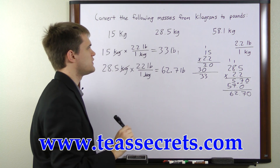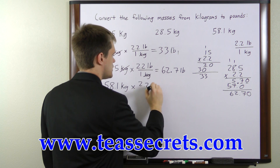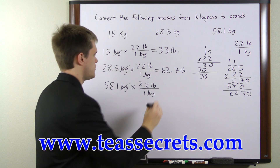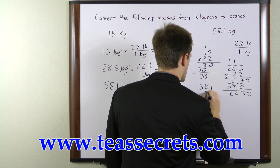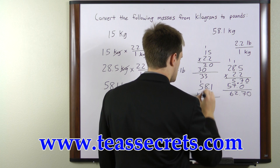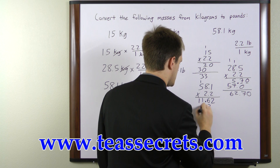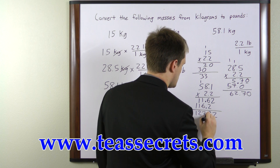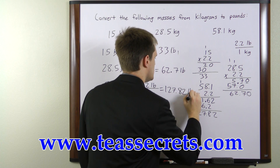Our final mass is 58.1 kilograms. We multiply it one more time by our conversion factor, 2.2 pounds per one kilogram. The units cancel and we have 58.1 times 2.2 pounds. 2 times 1 is 2; 2 times 8 is 16; 2 times 5 is 10 plus 1 is 11. This is just going to be the same pattern of numbers repeated one place to the left. We add these up: 2, 8, 7, 2, 1 — so 58.1 kilograms is the same as 127.82 pounds.